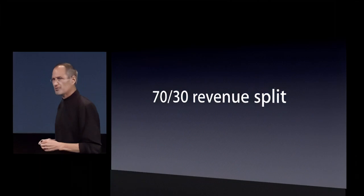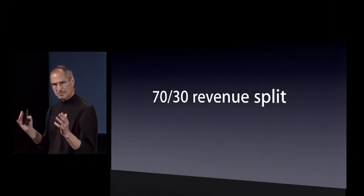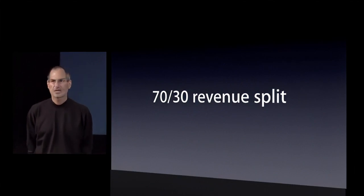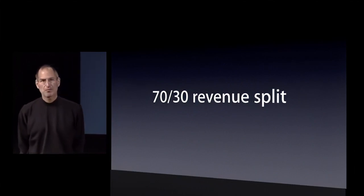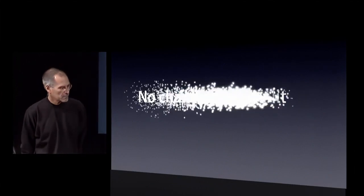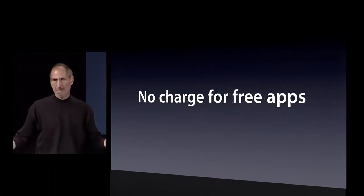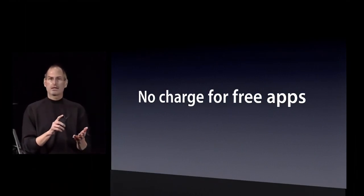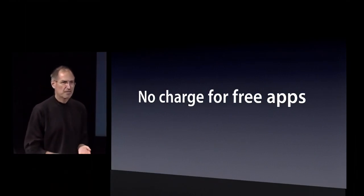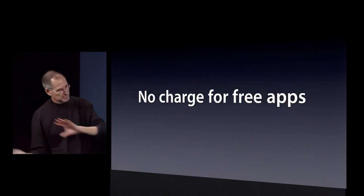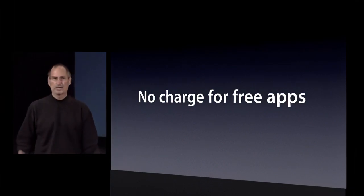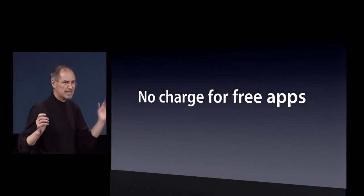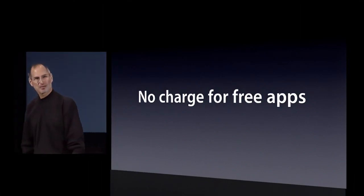We talk about the 70-30 revenue split, but the developer gets to pick the price. And you know what price a lot of developers are going to pick? Free. When a developer wants to distribute their app for free, there is no charge for free apps at all — no charge to the user and no charge to the developer. We're going to pay for everything to get those apps out there for free. The developer and us have the same exact interest: to get as many apps in front of as many iPhone users as possible.